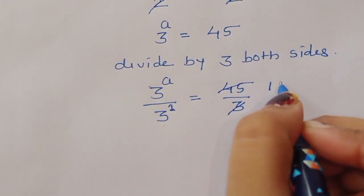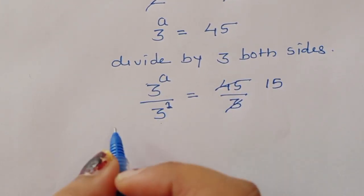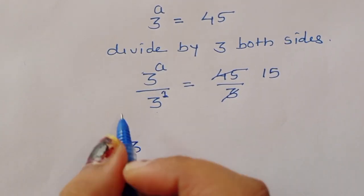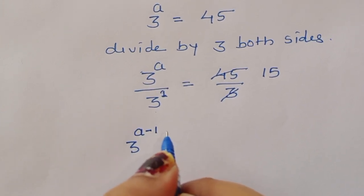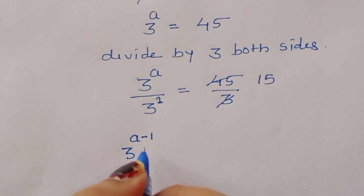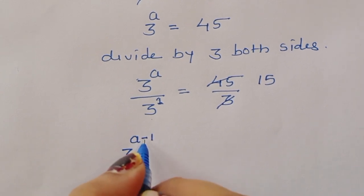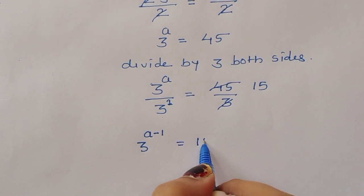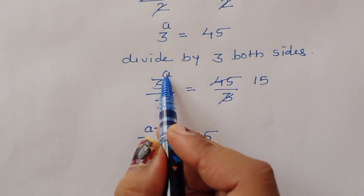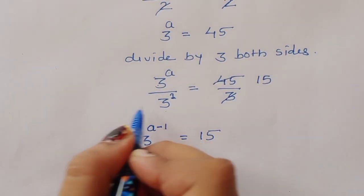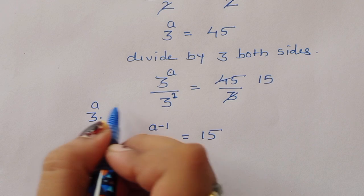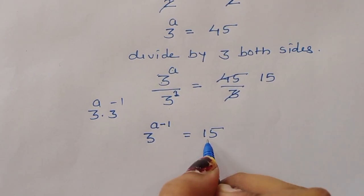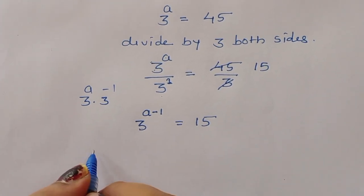45 divided by 3 gives 15. So we can write 3 power a divided by 3 power 1 as 3 power a times 3 power minus 1, which equals 3 power (a minus 1). Therefore 3 power (a minus 1) is equal to 15. Now we take log on both sides.